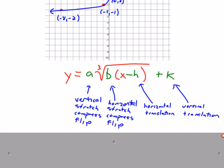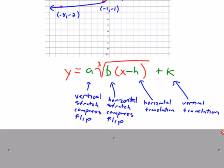This is what a cube root function would look like with transformations in it. This is where you would find a, b, h, and k. The way that we perform the transformations is the same as we've done all year.